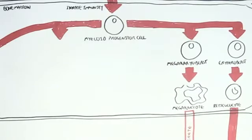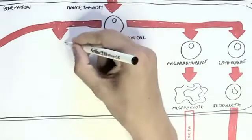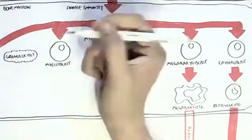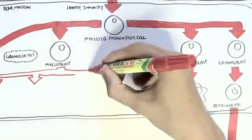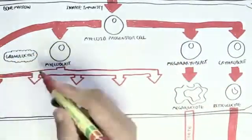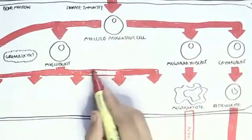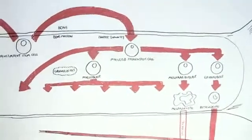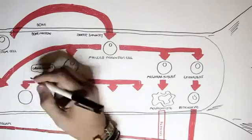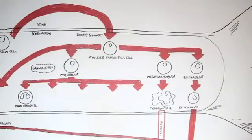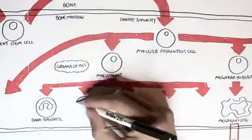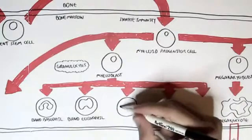It should be noted that I'm not including all the names of all the types of cells that give rise to each of the immune cells — only the names of a couple of cells for simplicity. The myeloid progenitor cell can also give rise to what's called the myeloblast. The myeloblast can give rise to a variety of cells, including a group known as granulocytes. Granulocytes are special because they contain granules. The three granulocytes produced in the bone marrow are the band basophil, the band eosinophil, and the band neutrophil.